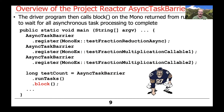The driver program — the main program — then calls the block method on the mono that's returned from runTasks. This block is the one and only place that we wait for all the asynchronous task processing to complete. Everything else is running in the background, unhindered, able to do things concurrently and asynchronously, but the main thread is going to be blocking, waiting for everything to finish.